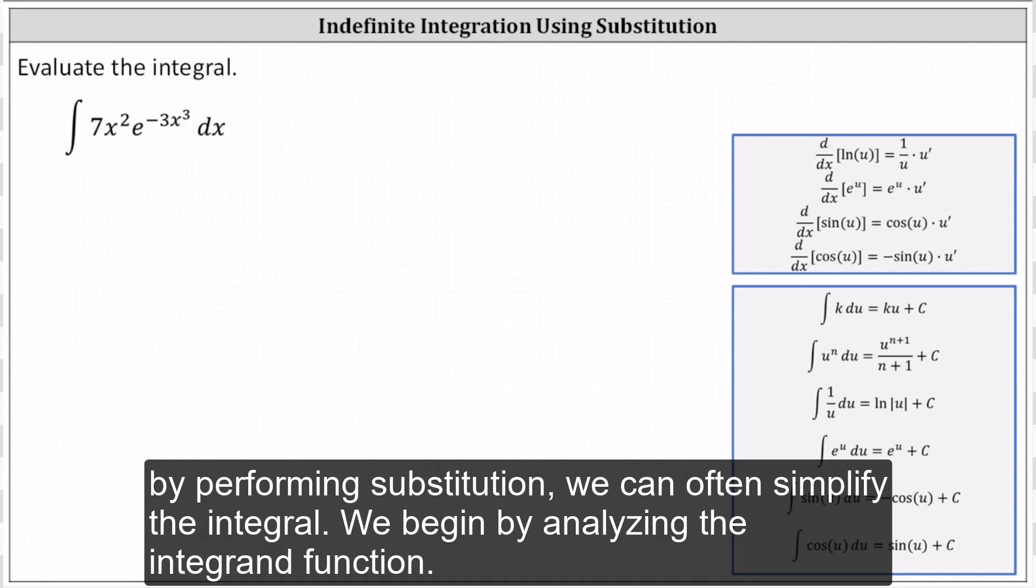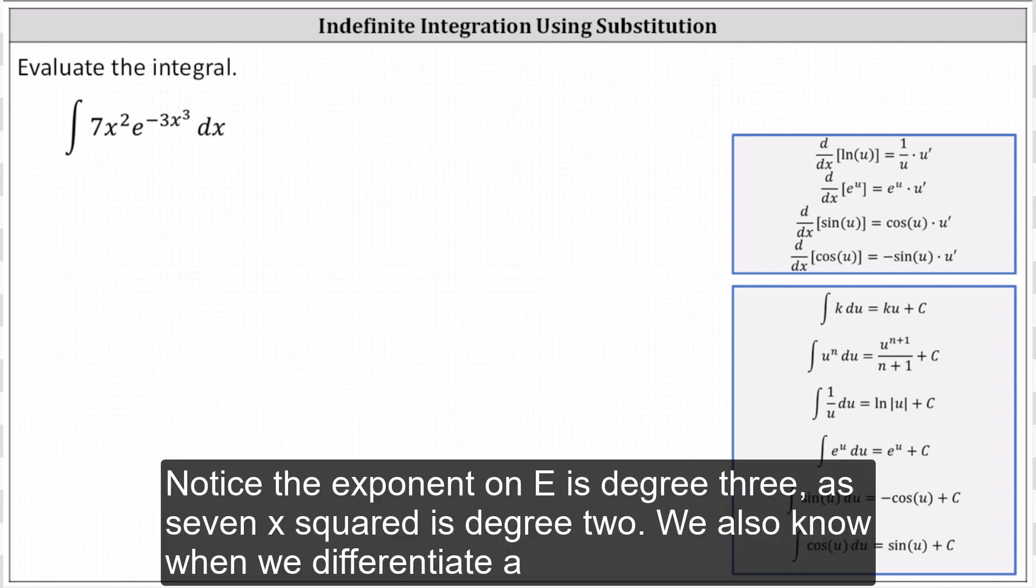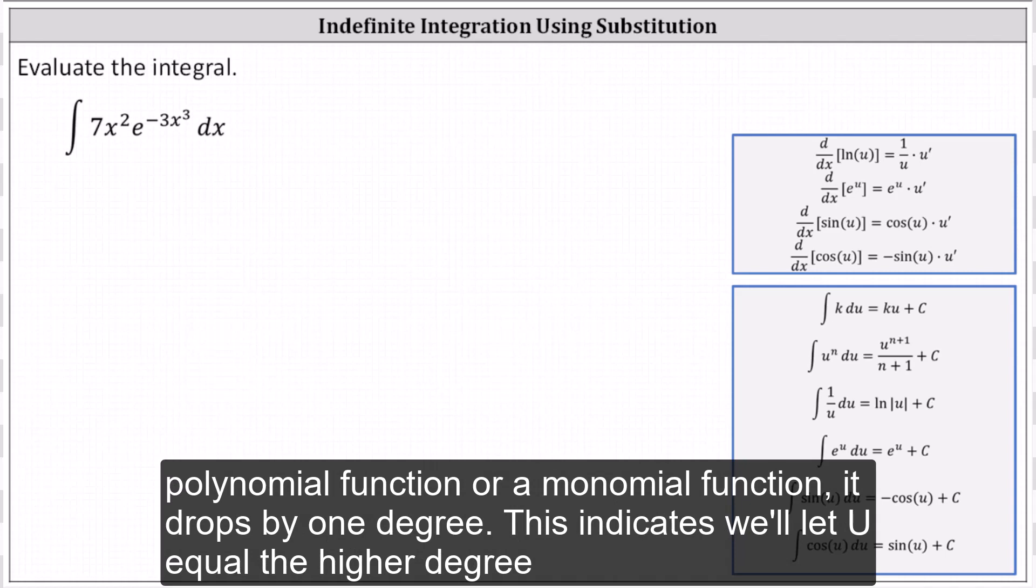We begin by analyzing the integrand function. We want to let u equal part of the integrand function so that the derivative of u resembles the remaining part. Notice the exponent on e is degree three and 7x² is degree two. We also know when we differentiate a polynomial function or a monomial function, it drops by one degree.